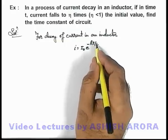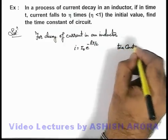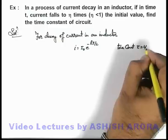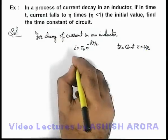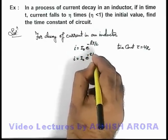And here we can also write time constant of circuit is τ, which is written as L by R. So this current in terms of time constant can be written as i₀e to the power minus t by τ.